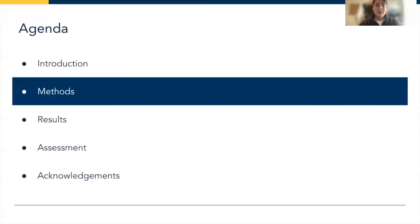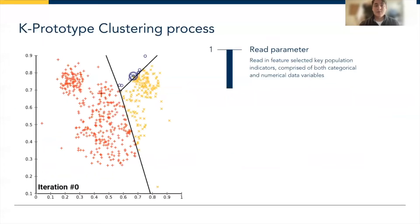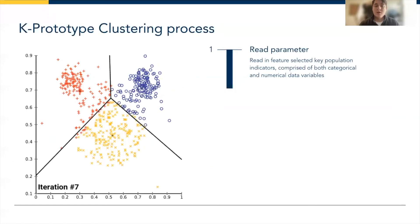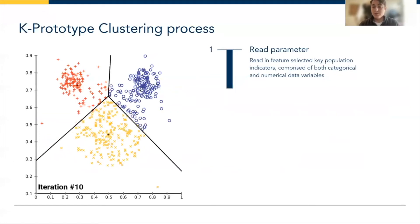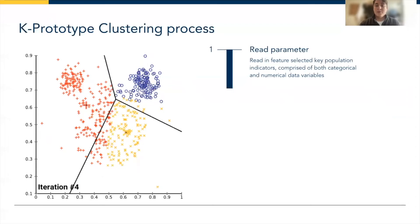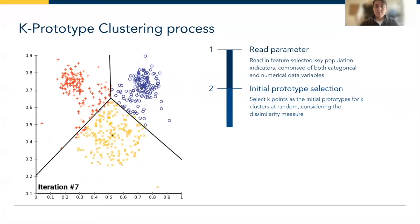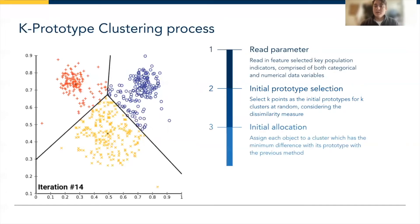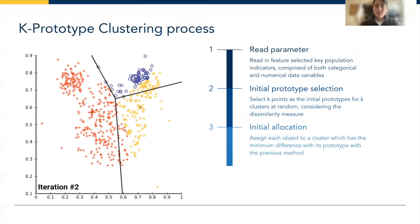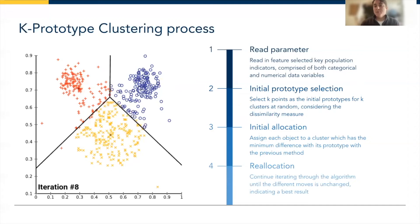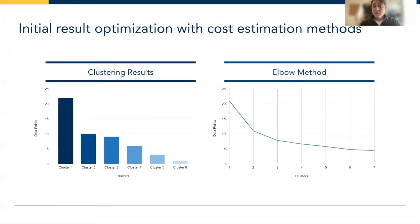The key method used here is the k-prototype clustering process, which is the algorithm the majority of the project revolves around. The reason for choosing this over k-means or k-modal clustering is that k-prototype is capable of reading both categorical and numerical data variables. You begin the initial prototype selection by specifying a number of clusters, and the algorithm uses a dissimilarity measure to allocate each data point, continuing to reallocate until there are no better moves to perform.